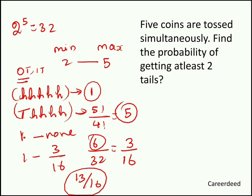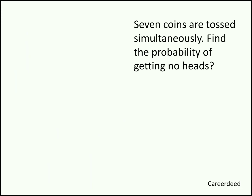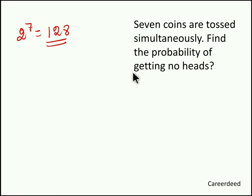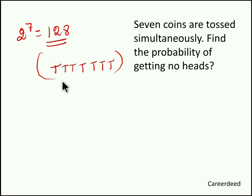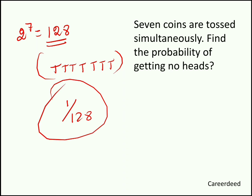Question 6: Seven coins are tossed simultaneously. Find the probability of getting no heads. While tossing 7 coins the total sample space is 2 power 7, which is 128. To get no heads, all coins must be tails — there is only 1 such way. So 1 by 128 is the probability of getting no heads while tossing 7 coins.